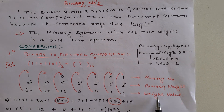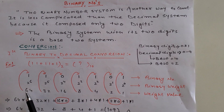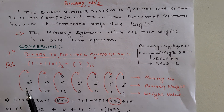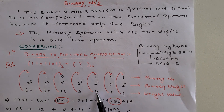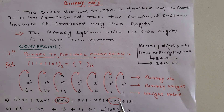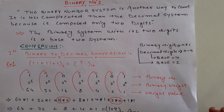This is called the weight value. After opening the power, multiply each weight value by the corresponding binary digit. You can skip where the binary digit is zero. So the values will be 64, 32, 8, 4, 1.